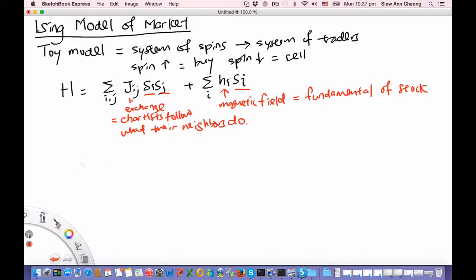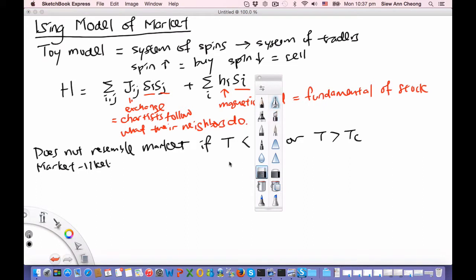What we understand from the behavior of the Ising model is that it does not resemble the financial market if the temperature of the model is very much lower than the critical temperature, or if the temperature of the model is very much larger than the critical temperature.